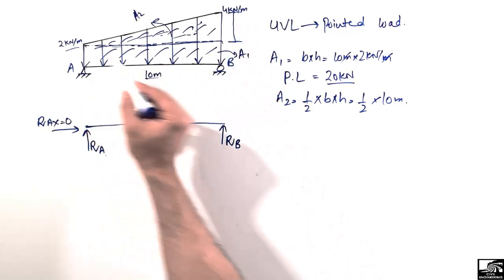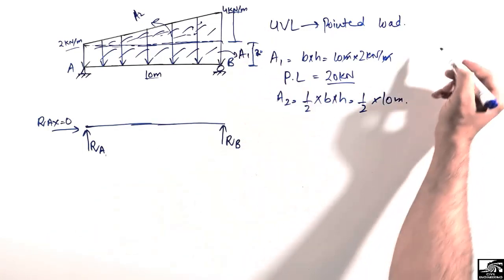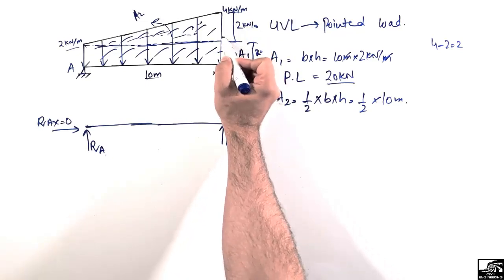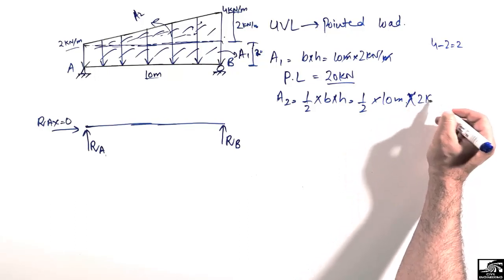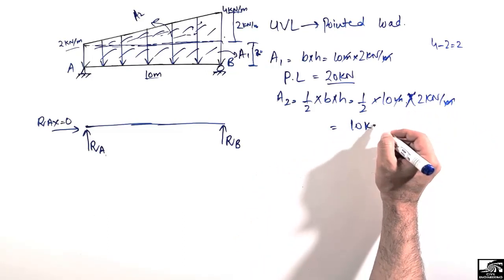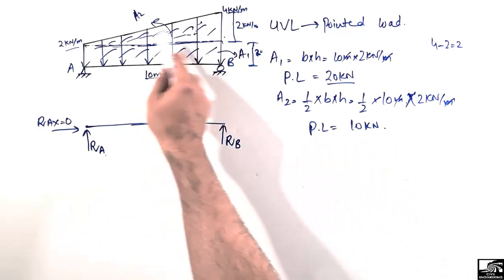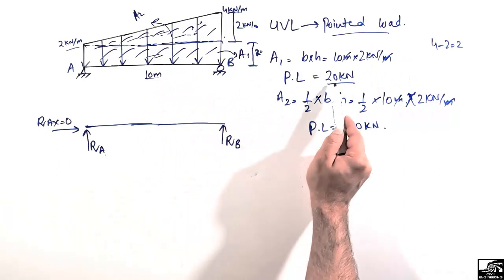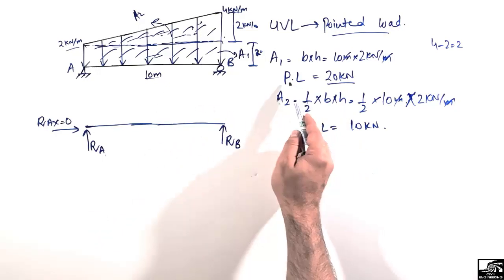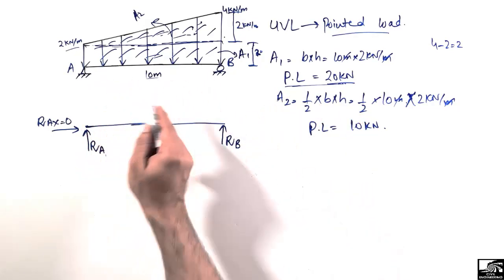For the triangle, the height is the difference between the maximum and minimum load intensities: 4 minus 2 equals 2 kilonewton per meter. So A2 = ½ × 10 × 2 = 10 kilonewton. This is the point load from the triangle. We have now converted the uniformly varying load into point loads: 20 kilonewton from the rectangle and 10 kilonewton from the triangle.